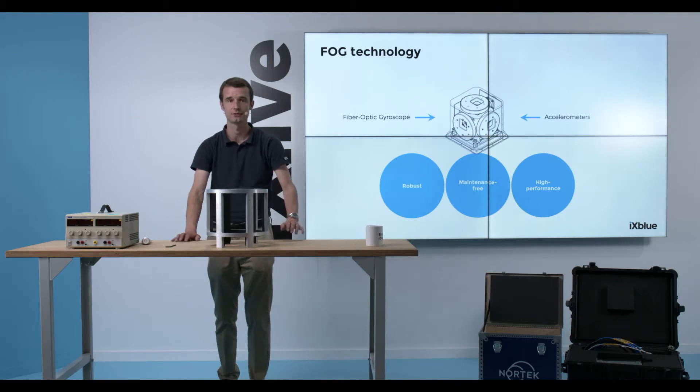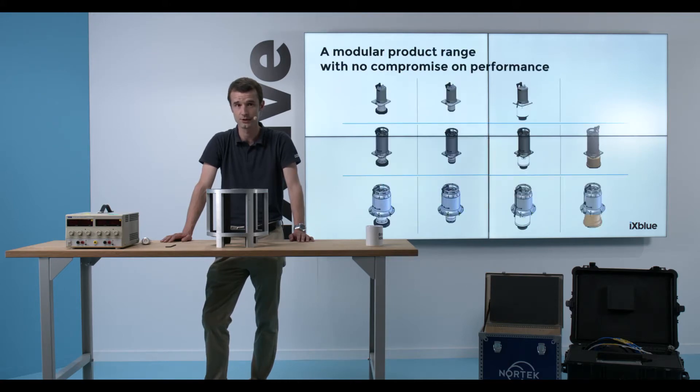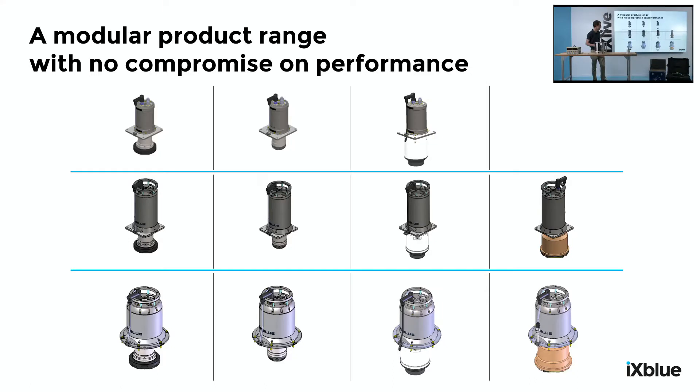For that purpose, IX Blue partners with DVL manufacturers, Doppler Velocity Log, and offers a set of solutions in which our users are able to choose optimum solutions for their project without compromising performance. This partnership allows IX Blue to offer a modular approach with either different grades of units and different grades of DVLs, giving us up to more than 20 configurations.